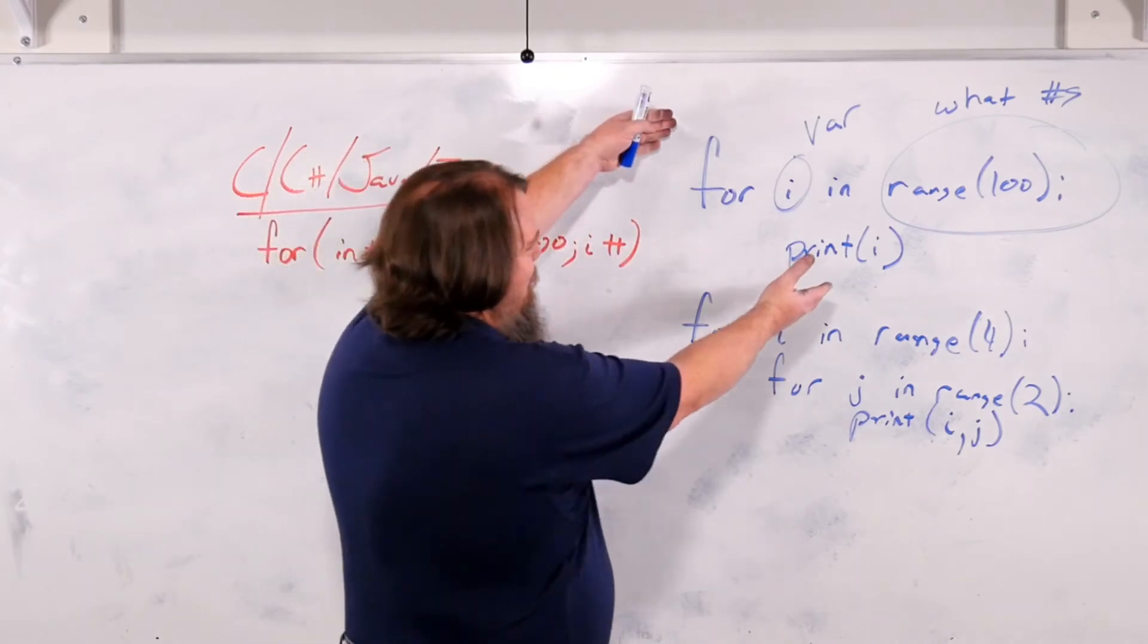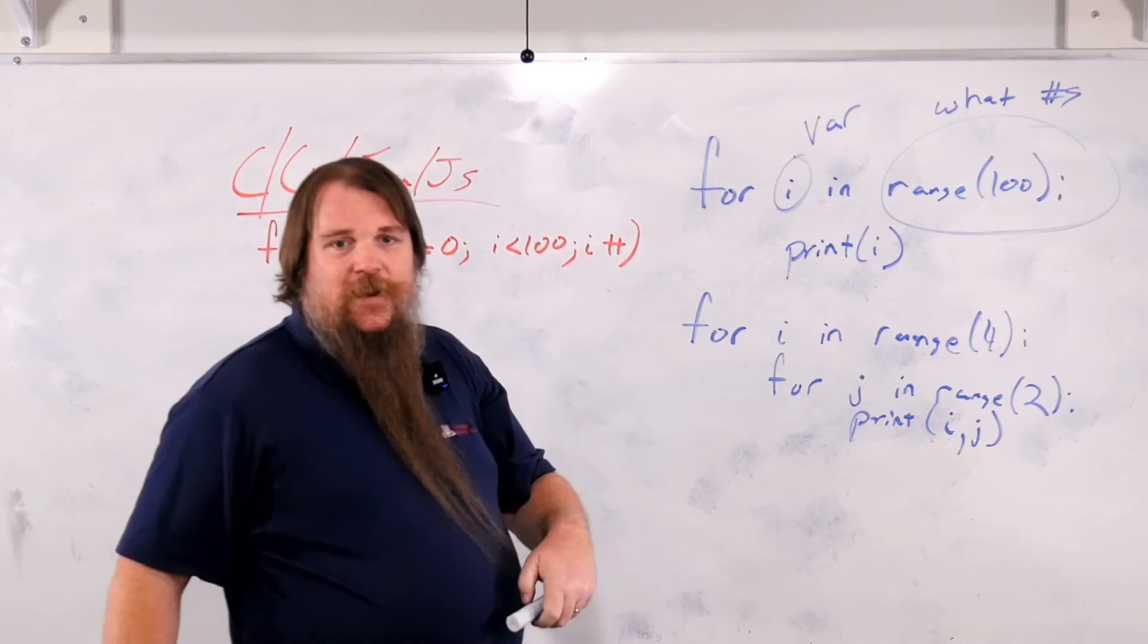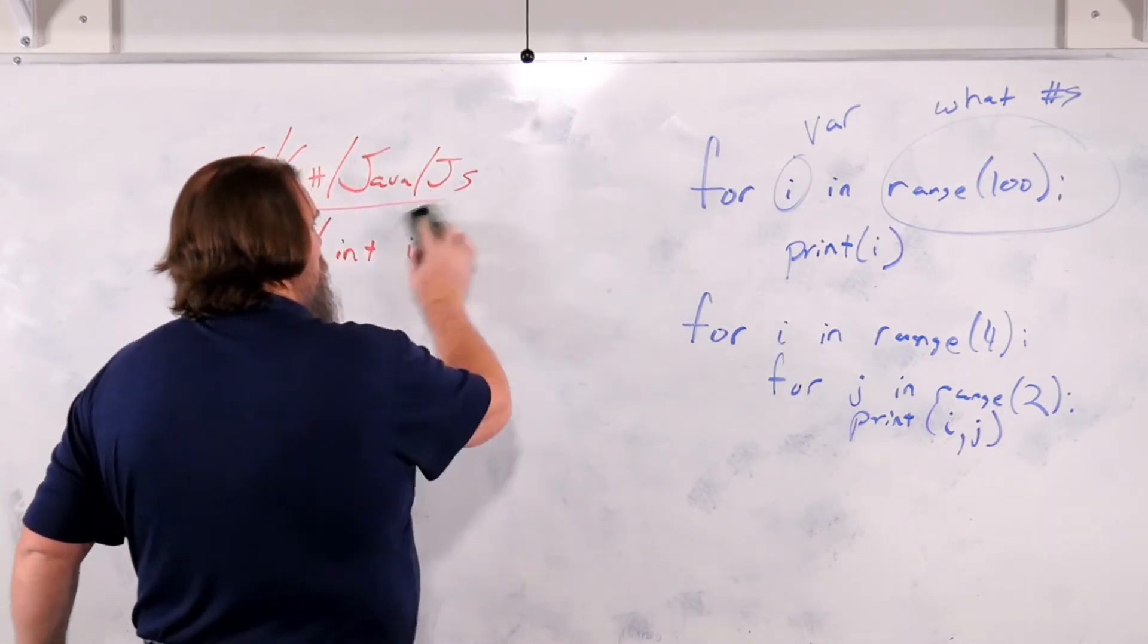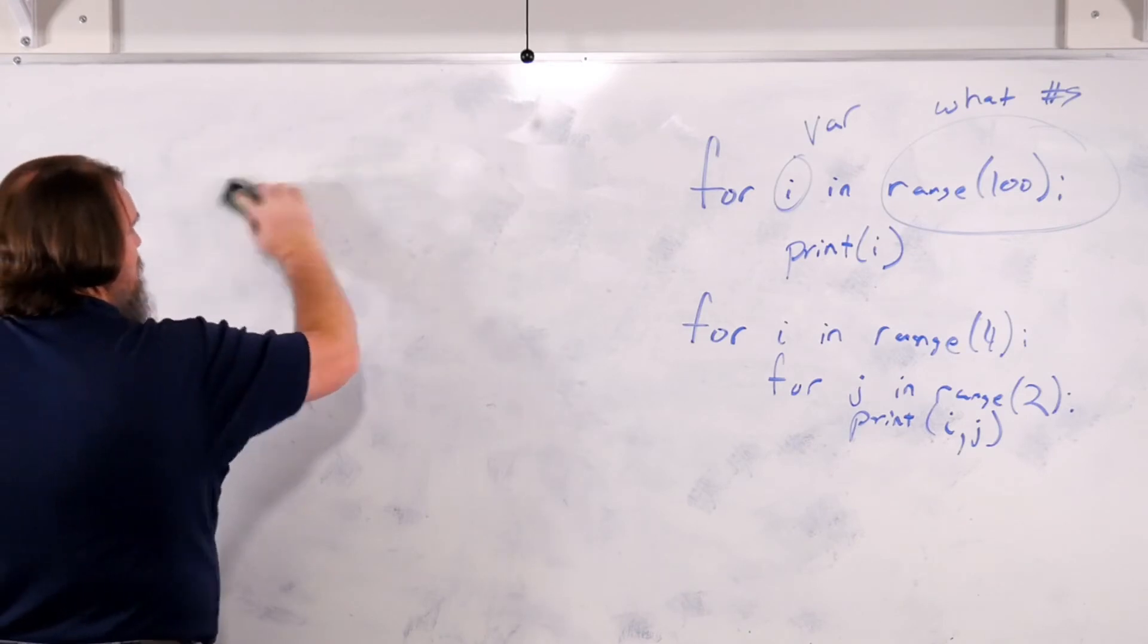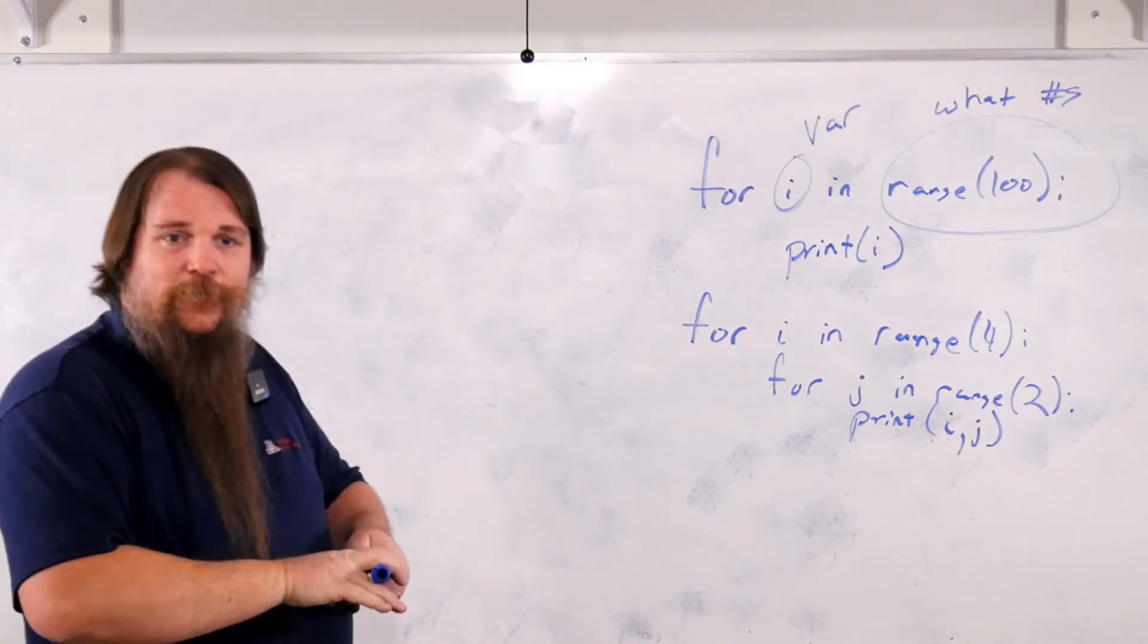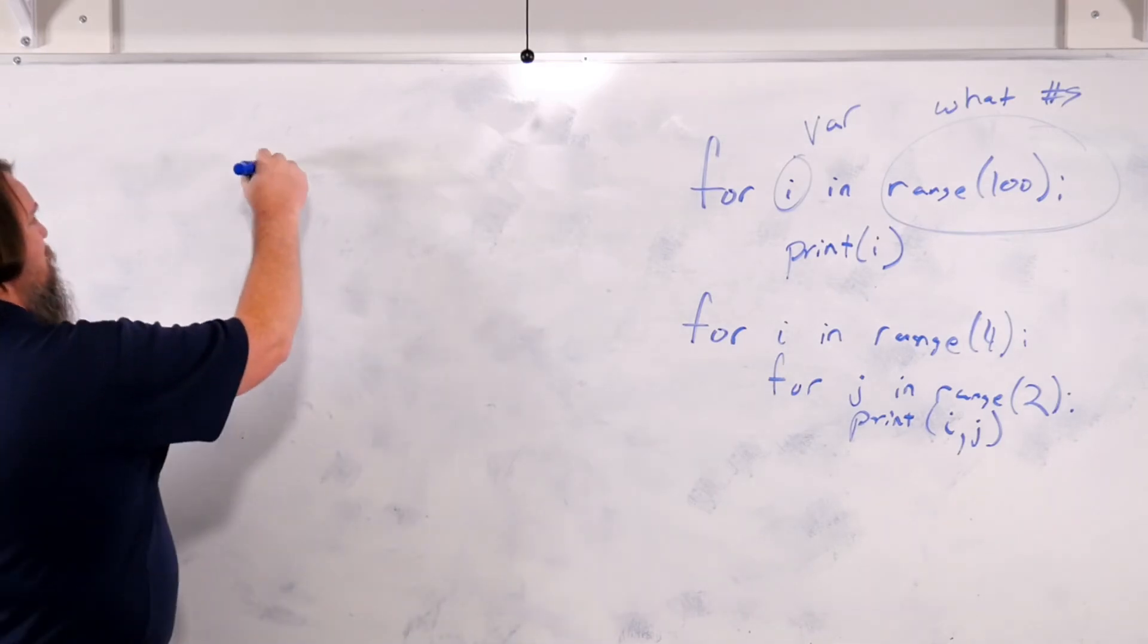So this is the key loop. What might you use it for? Well, you could use it for printing a whole bunch of things. You could print a whole bunch of numbers, but you could also use it for something like this.